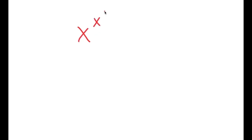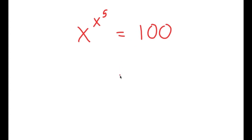In this video, I'm going to solve the equation x to the power of x to the power of 5 is equal to 100. To solve this equation, I'm going to first start by taking the power of 5 on both sides.